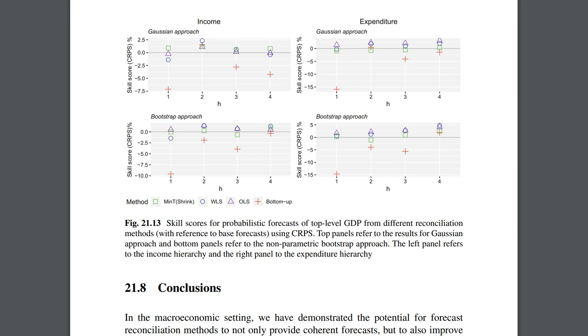For evaluating the probabilistic forecasts, they used the Cumulative Rank Probability Score, CRPS, but also mentioned the Generalized Energy Score when evaluating probabilistic forecasts with multiple outputs.